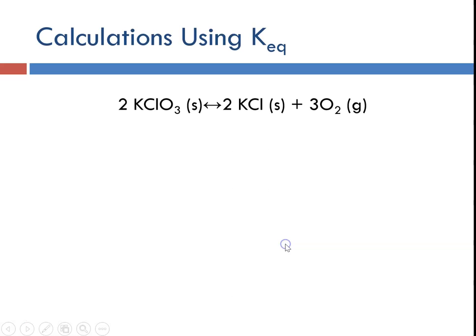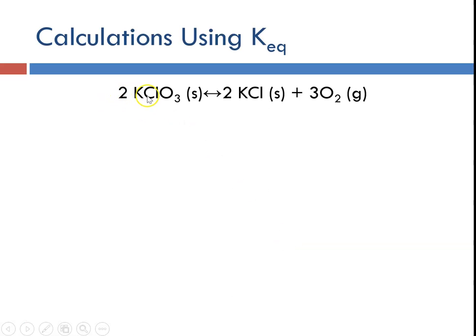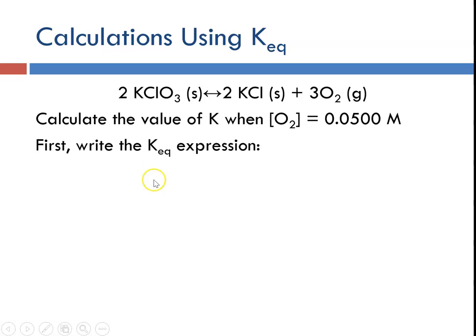So calculations for the decomposition of potassium chlorate to produce potassium chloride and oxygen. Calculate the value of K when the concentration of oxygen is 0.0500 molar, notice three sig figs.